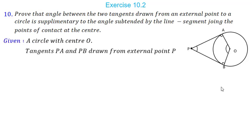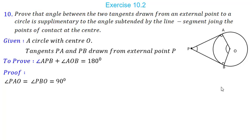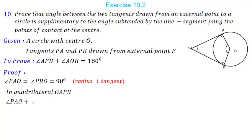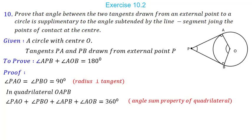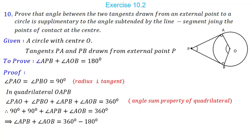Given; we have to prove angle APB + angle AOB = 180°. In the proof: angle PAO = angle PBO = 90° as radius is perpendicular to tangent. Taking quadrilateral OAPB, the sum of all four angles equals 360°. Substituting the values of angle PAO and PBO: angle APB + angle AOB = 360° − 180° = 180°. Hence proved.